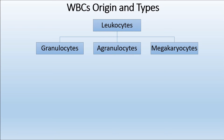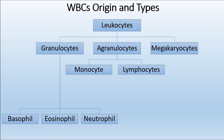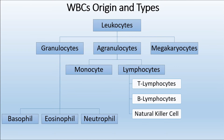As the names suggest, granulocytes are WBCs that have granules within their structure, while agranulocytes do not have granules. Agranulocytes are further subdivided into lymphocytes and monocytes. Granulocytes include basophils, eosinophils (sometimes pronounced eosinophils), and neutrophils. Monocytes and lymphocytes can be further subdivided: lymphocytes include T lymphocytes, B lymphocytes, and natural killer cells.